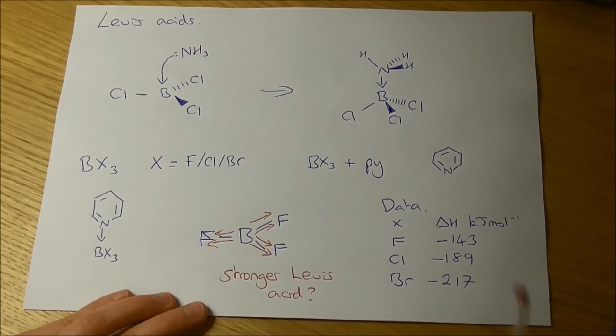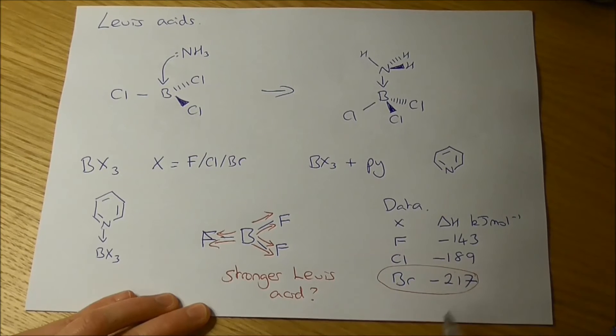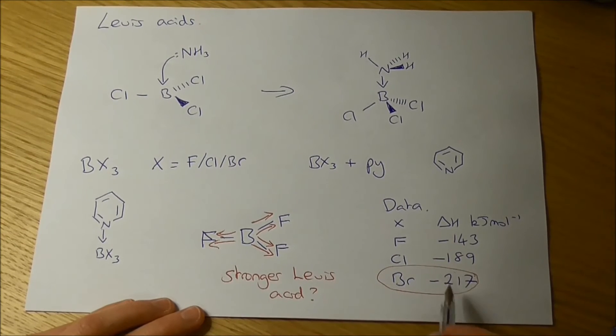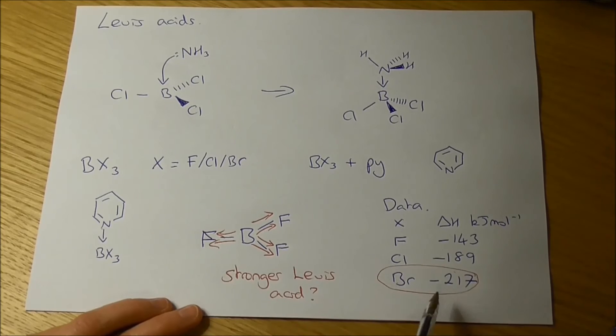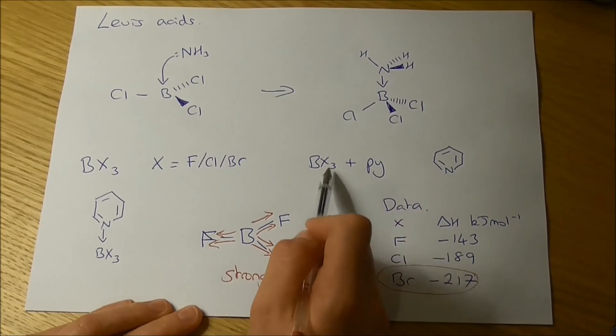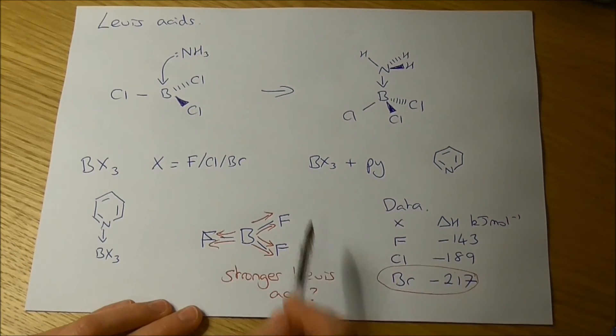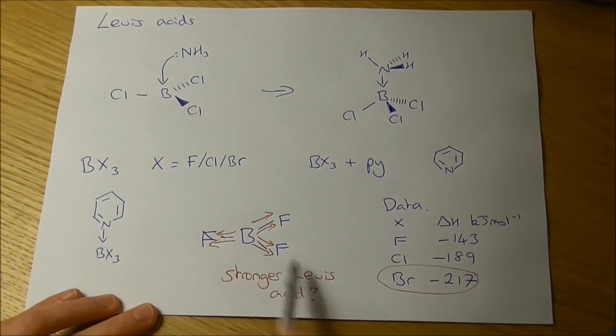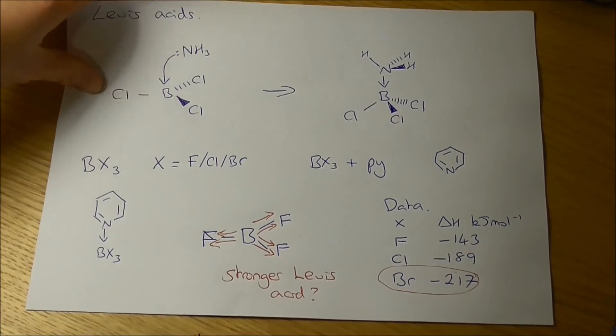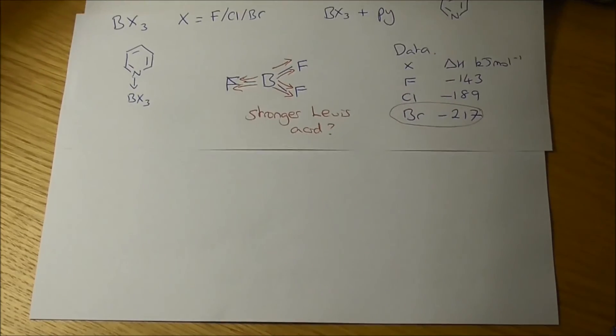It's this bromine here that's the largest negative value, the biggest magnitude, so delta H is the largest negative value for this reaction where X is bromine, so this is the most exothermic. But we think that the fluorine compound is the one that's the strongest Lewis acid.